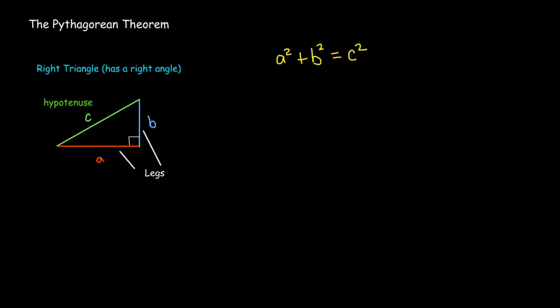We could also solve that for c. Because we know the length is going to be positive, we only use the positive square root. So c equals the square root of a squared plus b squared.